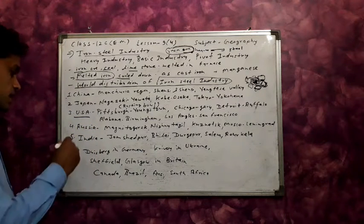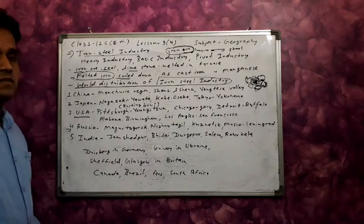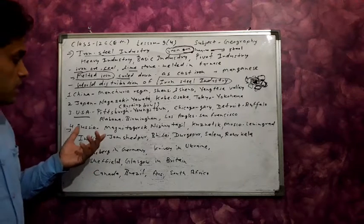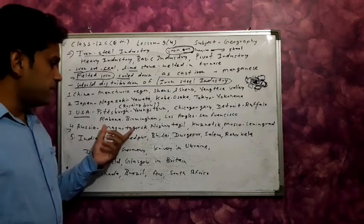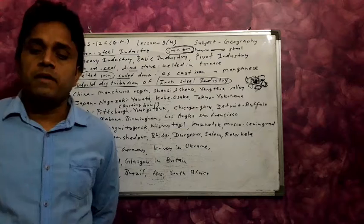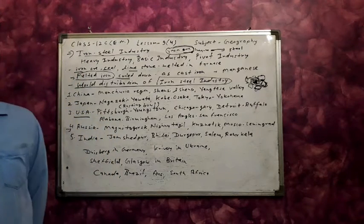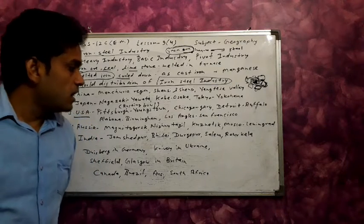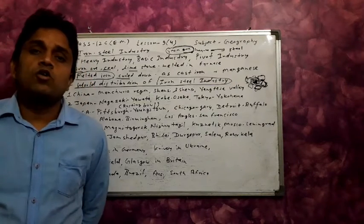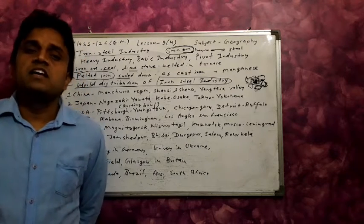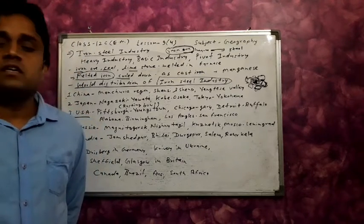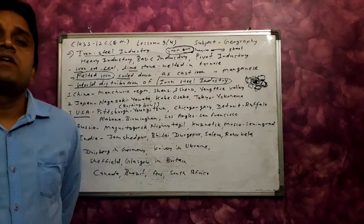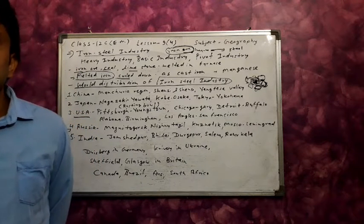Russia has the fourth place in production of iron and steel in the world. Famous regions include Magnitogorsk and Nizhny Tagil in the Ural region, and Kuznetsk, which is also famous for iron and steel. The Moscow region and nearby Leningrad are also famous iron and steel industry centers in Russia.